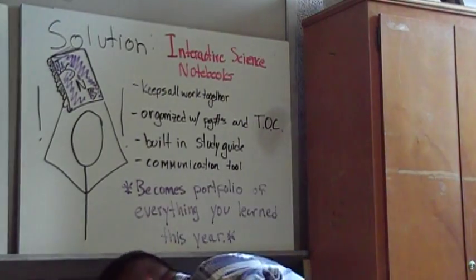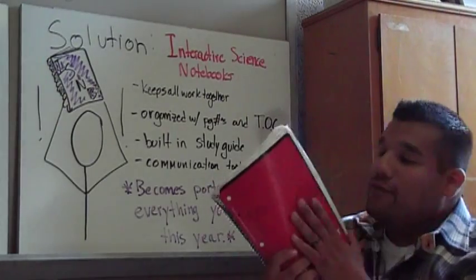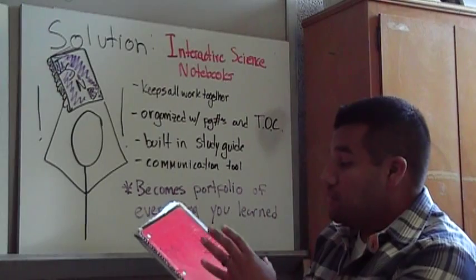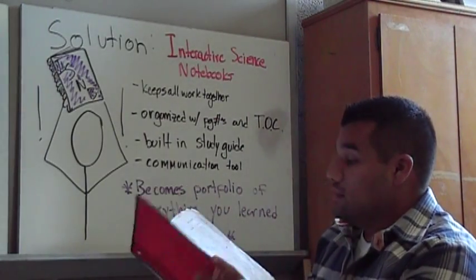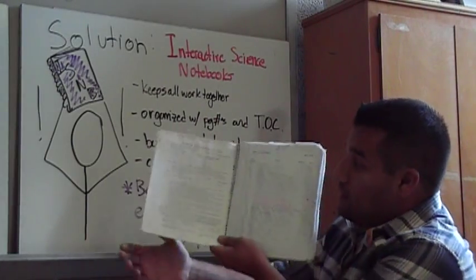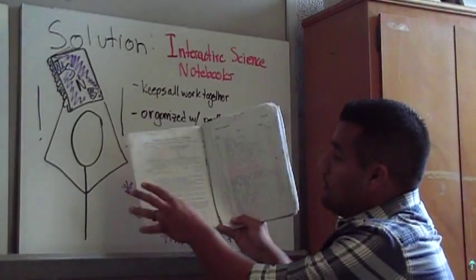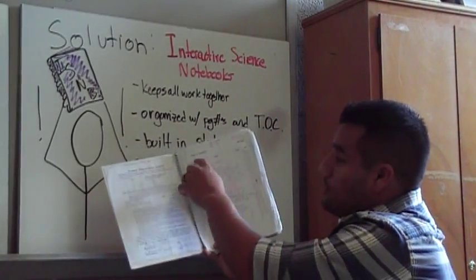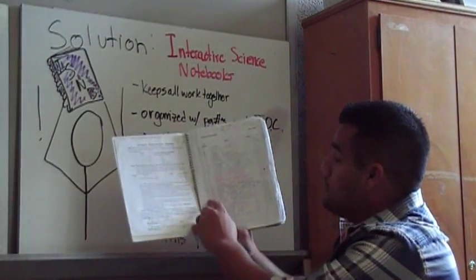So just as an example, I have one here from a student last year. Here's our eighth grade science interactive notebook. This one is for chemistry. Here you see they have an explanation of grading and you and your parents will sign here. Here's the table of contents. So every entry that you do will be put in your table of contents.